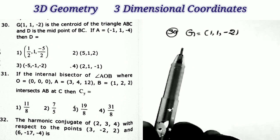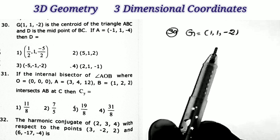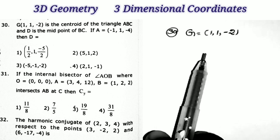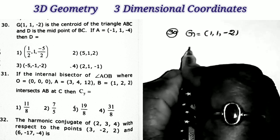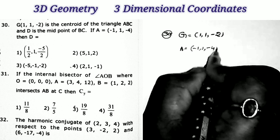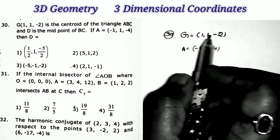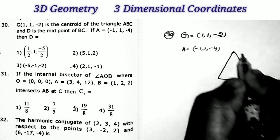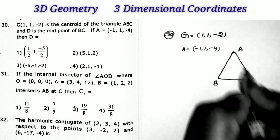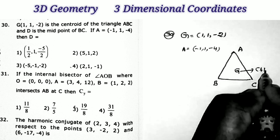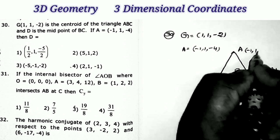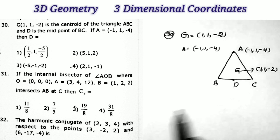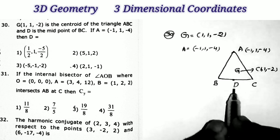Let us start the class. This is sum number 30 — in yesterday's video I completed up to the 29th problem, so I start the 30th sum. Given that G = (1, 1, -2) is the centroid of triangle ABC, D is the midpoint of BC, and A = (-1, 1, -4). What are the coordinates of D? That is the given question.